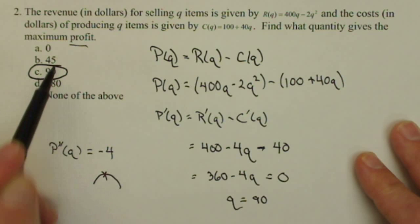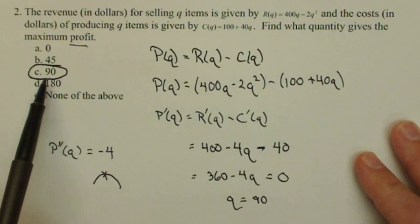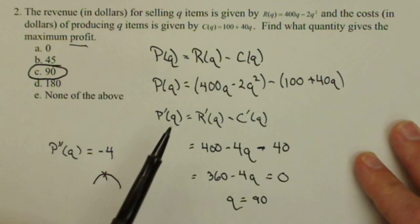And so, 90 is going to be our amount of units that gives us a maximum profit.